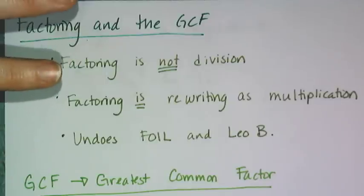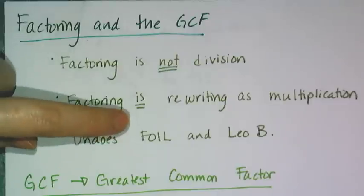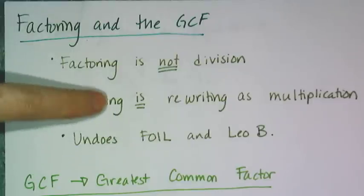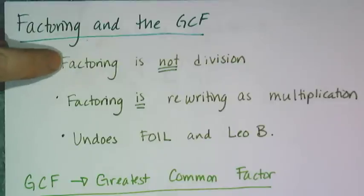That's what factoring really is, it's unsimplifying. Which means factoring undoes the multiplication you learned in FOIL and the LEO-B multiplication. So it takes the answers from FOIL and LEO-B and goes backwards and gives you the original problem.